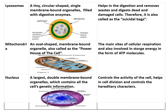Next is mitochondria — an oval-shaped, membrane-bound organelle also called the powerhouse of the cell. It helps in the release of energy in the form of ATP. It has a double wall, and the inner wall has folds called cristae. Mitochondria have their own DNA and their own ribosomes, making it one of the organelles with its own genetic material. Its function is to release energy in the form of ATP and to help in the synthesis of respiratory enzymes.